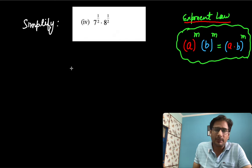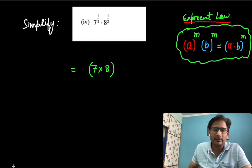So, let me apply this rule here. Base 7 and 8 written in multiply and the same power can be written as one time, the power is 1 by 2.